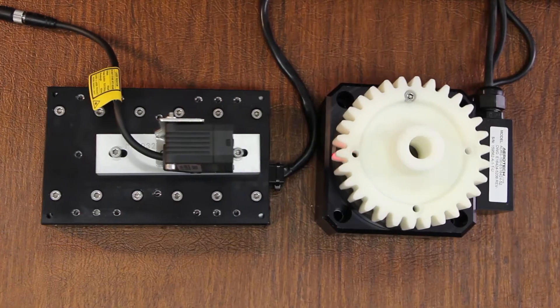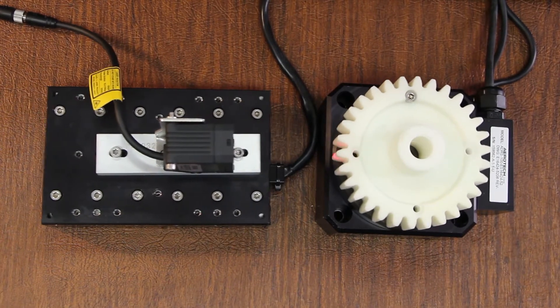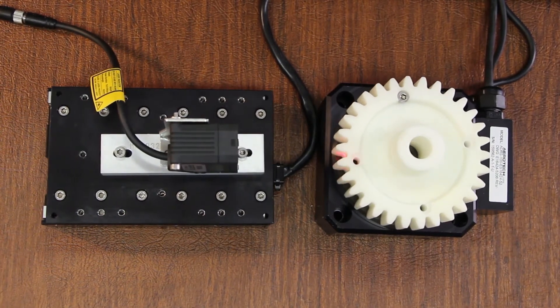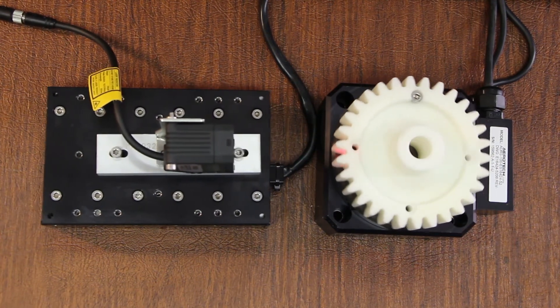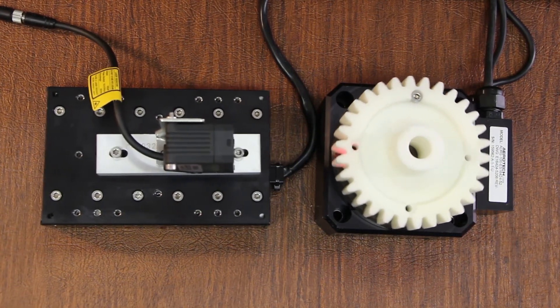The Automation 3200 machine controller, or A3200, is controlling both of these stages. Our objective is to command the linear stage to maintain a fixed distance from the gear's teeth.